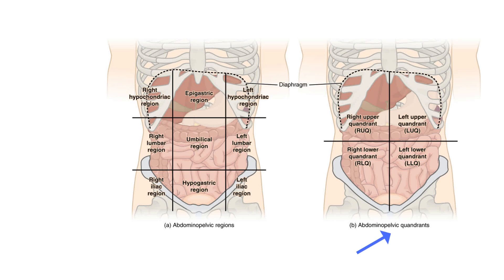For the four-quadrant method, a sagittal and transverse plane intersect at the umbilicus. The quadrants are the right and left upper quadrants and right and left lower quadrants. It is good to know some of the organs in each quadrant.